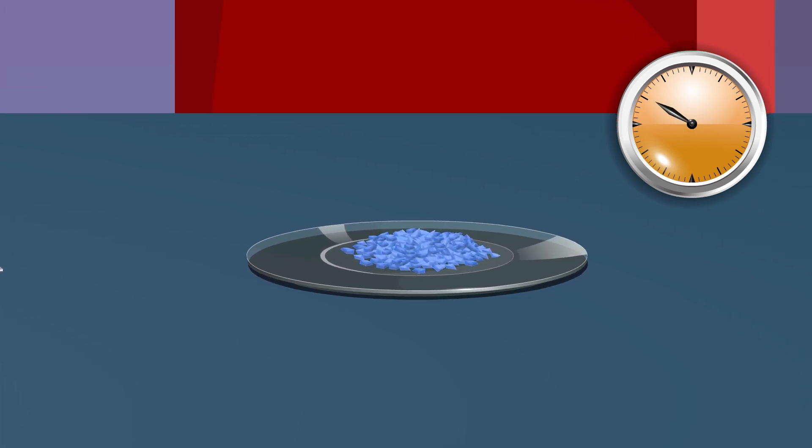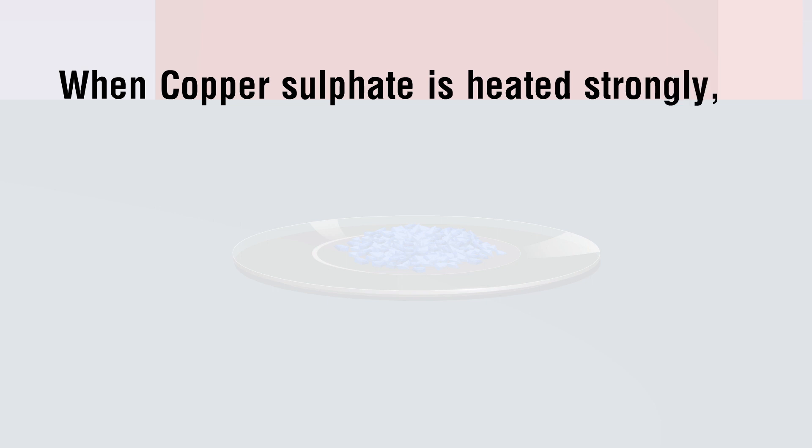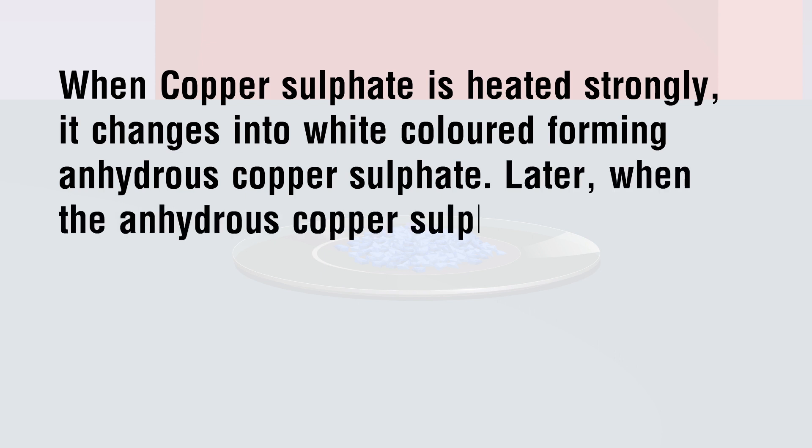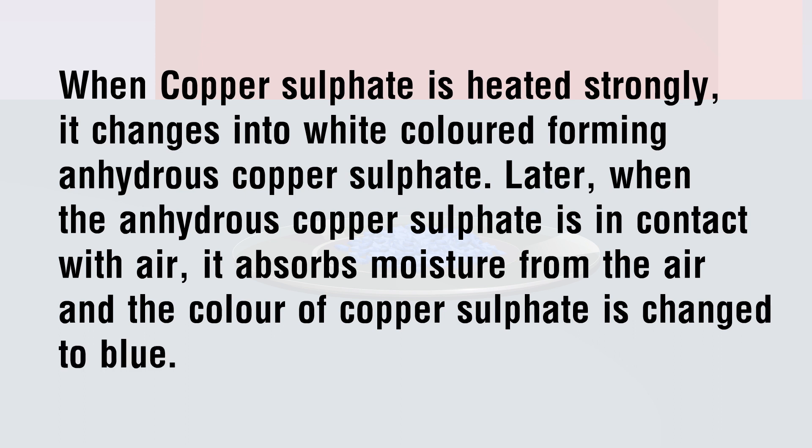When copper sulfate is heated strongly, it changes to white color, forming anhydrous copper sulfate. Later, when the anhydrous copper sulfate is in contact with air, it absorbs moisture from the air and the color changes to blue. This is a reversible chemical change.